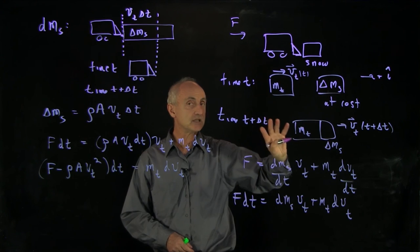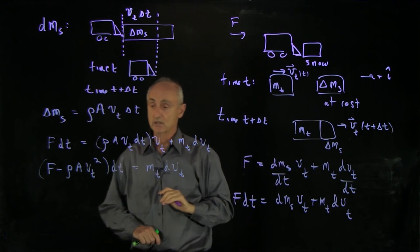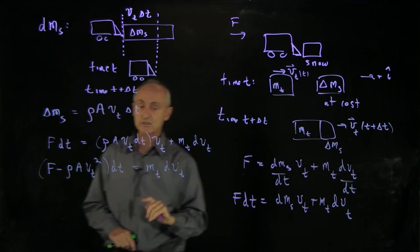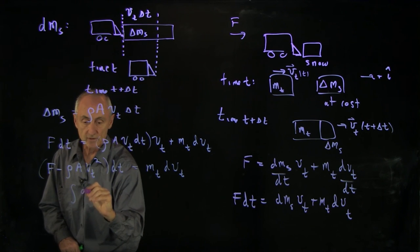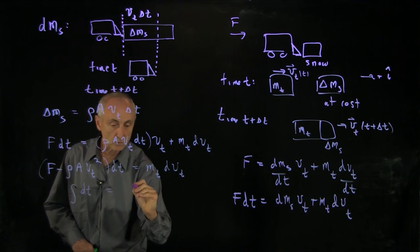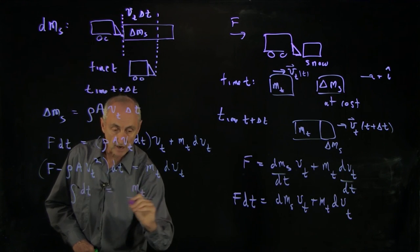Because when the snow gets into the truck, at the end of this delta t time interval, it gets displaced to the side. So this is an equation that we can separate and integrate.